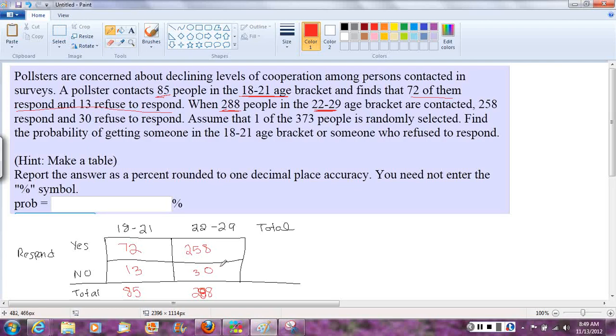And they throw one more useful piece of information here, this 373. Now they say, assume that one of the 373 people is randomly selected. So that gives us a total for the whole table. We could also have come up with this by hand by adding the 85 and the 288.